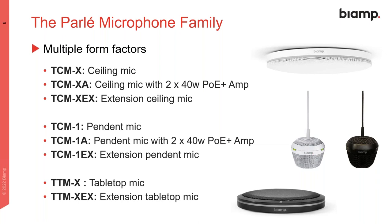We have an option for the network box that is the TCM-XA. In this package we have the microphone plus the network box, but in this case the network box integrates an embedded amplifier — a PoE amplifier with two channels. Then we have the third code, TCM-XCX, which is the extension, because every network box in the TCM-X or TCM-XA allows the connection of up to two microphones.